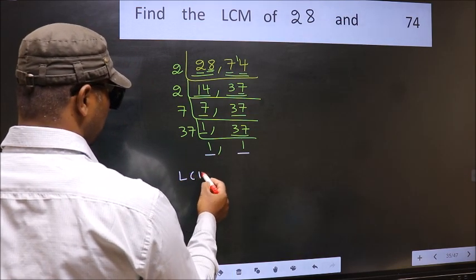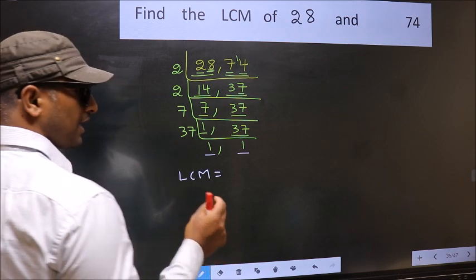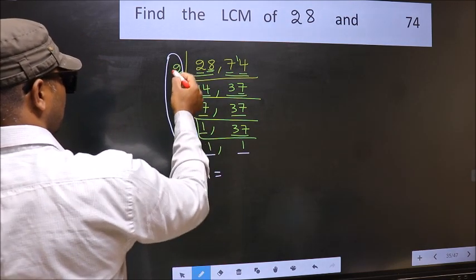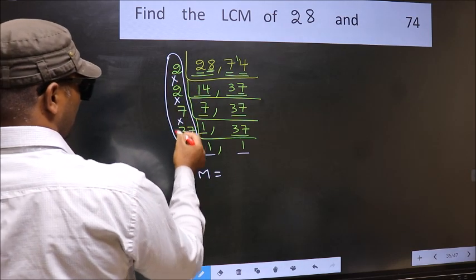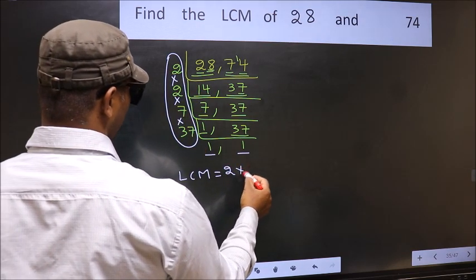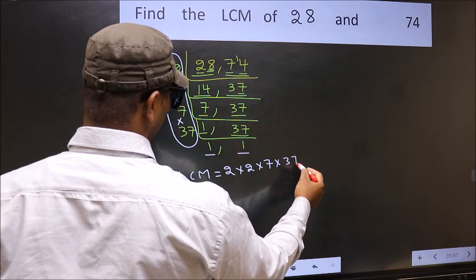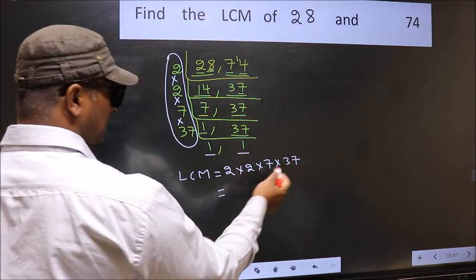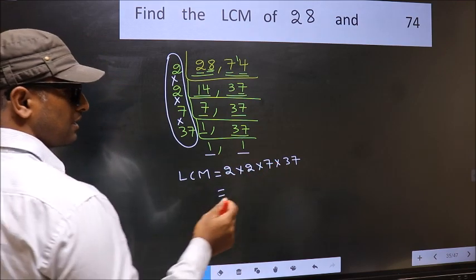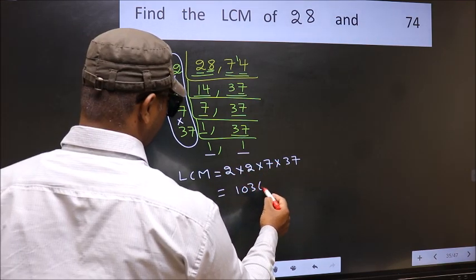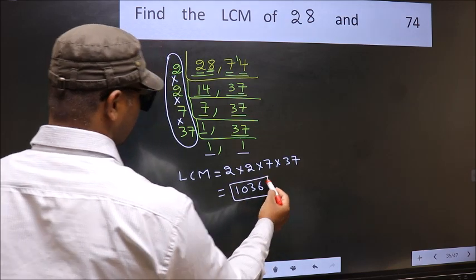So our LCM is the product of these numbers. That is 2 into 2 into 7 into 37. When we multiply these numbers, we get 1036 is our LCM.